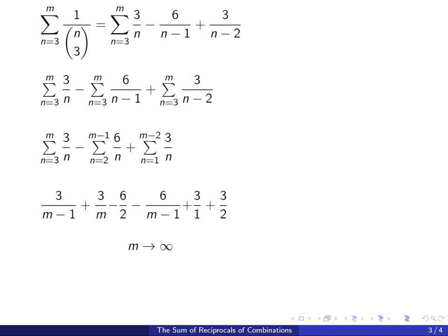Now if you let m go to infinity you get the infinite sum. The first term becomes 0. The second term also becomes 0. The third term is negative 3. The next term is 0. The next term is 3 and the last term is 3 halves. And if you add these up we get 3 halves. So the answer is 3 halves.